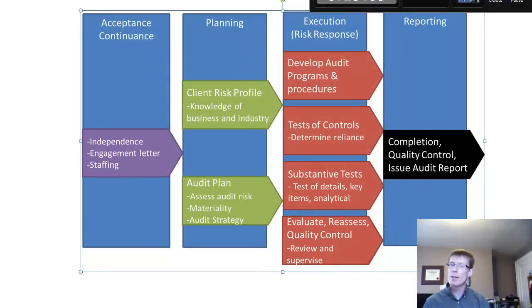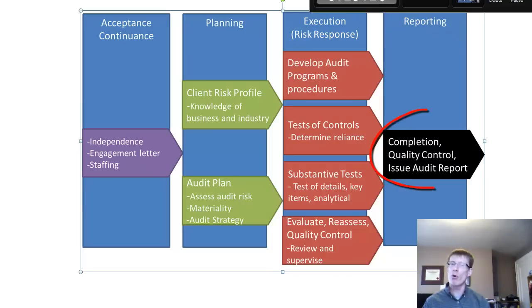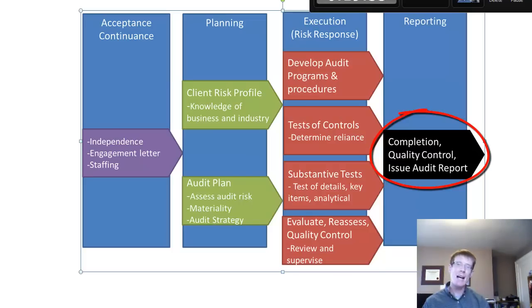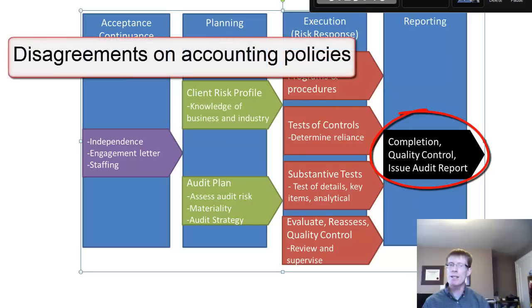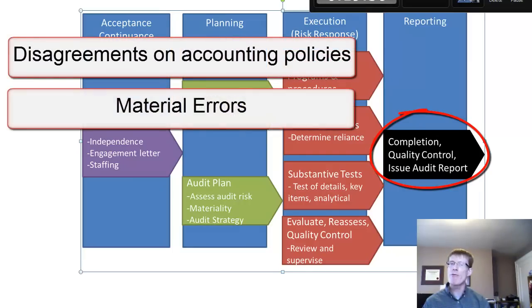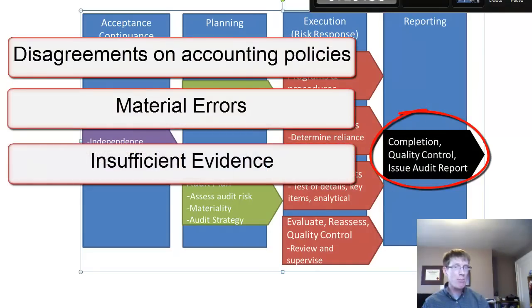The final phase of the audit is the reporting phase. During this phase, all final reviews and quality control procedures are completed to make sure the file supports the overall opinion of the accounting firm. The auditors will communicate their findings to the audit committee and senior management. The audit report will be released and attached to the financial statements. An unqualified audit opinion means the financial information management has prepared is fairly presented. If the auditors and management disagree, or there are errors management refuses to correct, or there are numbers for which auditors cannot find sufficient evidence, the auditors will amend their audit report accordingly to alert readers of such findings.